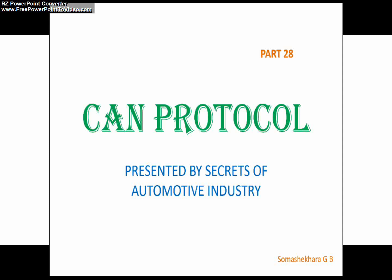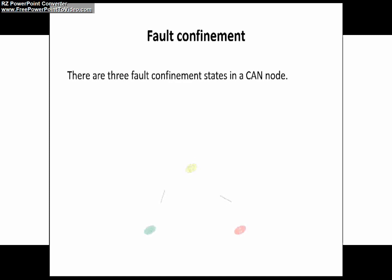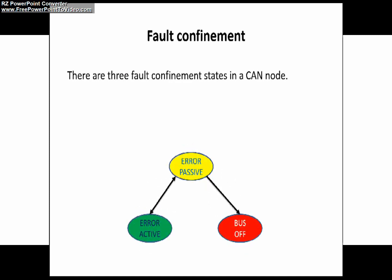As I already said in part 27, there are three states in Fault Confinement. The first one is Error Active, the second one is Error Passive, and the last one is Bus Off. As you can see in this slide, depending on the transmit and receive error counter values, the CAN node will decide its own state. Depending on the transmit error counter and receive error counter, the state of a CAN node will be decided in the CAN network.